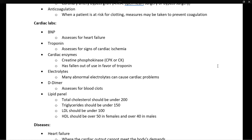Electrolytes — such as sodium, glucose, and potassium — can cause cardiac problems, so you would often see labs like magnesium or potassium assessed in a patient having heart problems. A D-dimer is a test that assesses for blood clots. A lipid panel is what we use to assess for cholesterol.